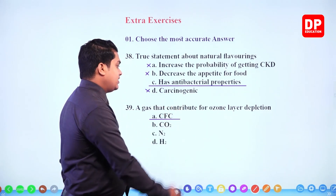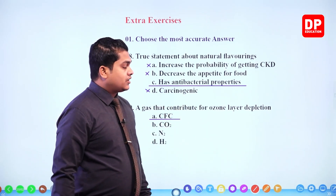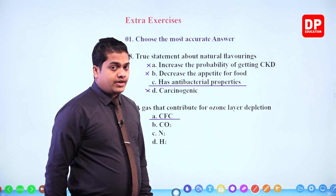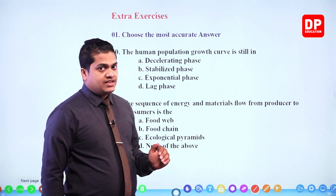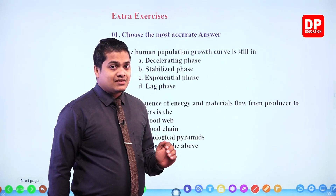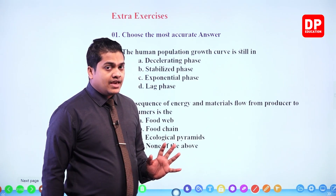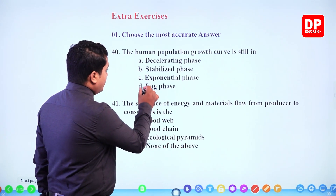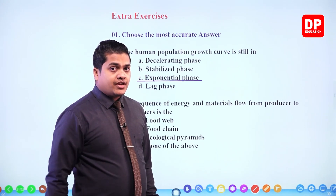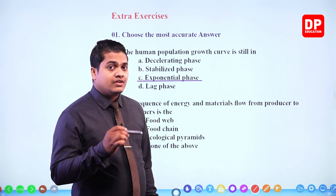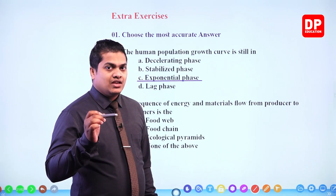Next: chlorofluorocarbon has the ability to contribute to ozone layer depletion. Next: human population growth curve is still in — decelerating phase, stabilized phase, exponential phase, or lag phase. We have passed the lag phase. Now the population keeps increasing dramatically, so we are at the exponential phase. That is why the shape of the human population growth curve takes a J-letter shape.